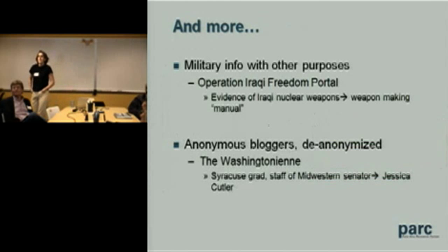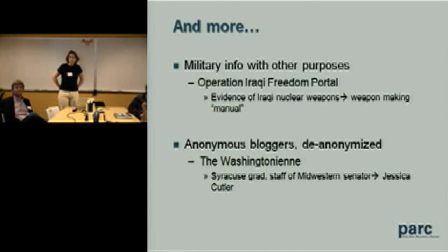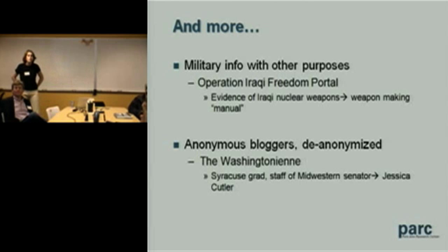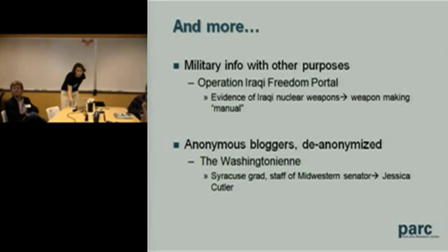There are lots more examples. The U.S. government had a short-lived website created to demonstrate the presence of nuclear weapons in Iraq, but it was quickly removed when it was realized it could be used to infer how to make such weapons. There are also bloggers who tried to maintain anonymity but revealed enough to be identified. One well-known example is a blog called The Washingtonian — the blogger revealed she was working for a Midwestern senator, revealed her alma mater, and it was very easy to identify her based on that.